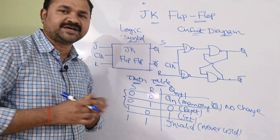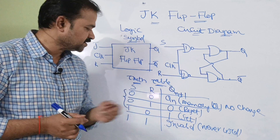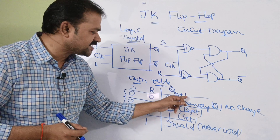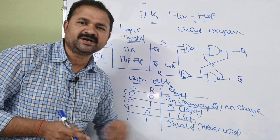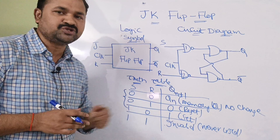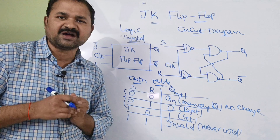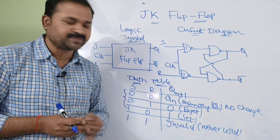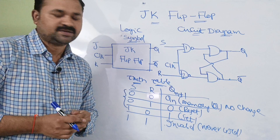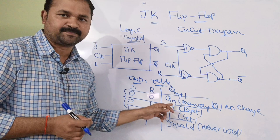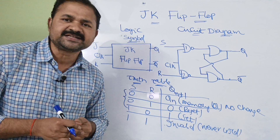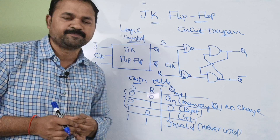Here S and R are the inputs. This is the truth table where Q(N+1) is nothing but the next state output. If the inputs are 0, 0, then the output is memory — there is no change. So that is nothing but Q(N). The next state output as well as current state output are both the same.